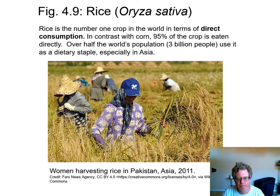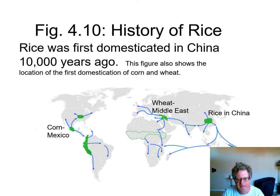I used to have an officemate from India. He said he eats rice at three meals a day. I said, even breakfast? He said, yep, even breakfast. Rice was first domesticated in China 10,000 years ago and spread from there. Of the other two crops, wheat was domesticated in the Middle East and corn was first domesticated in Mexico.